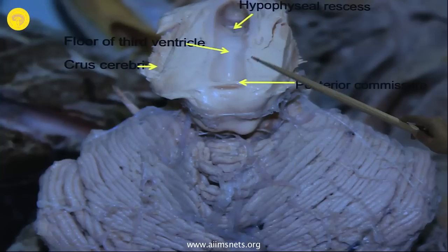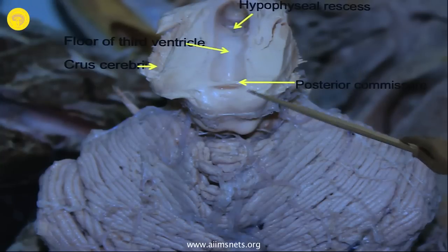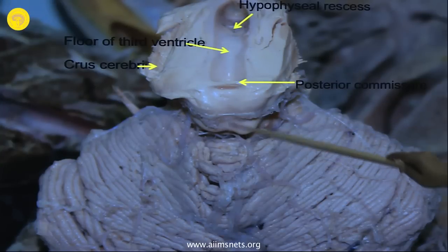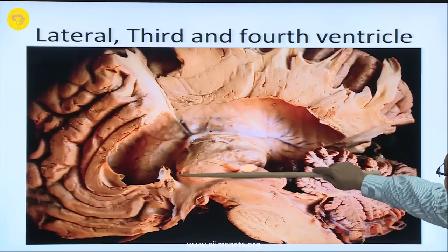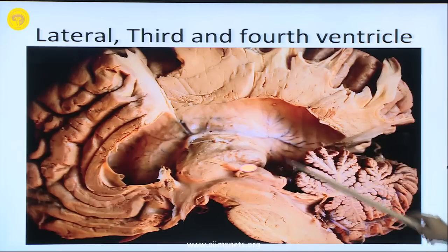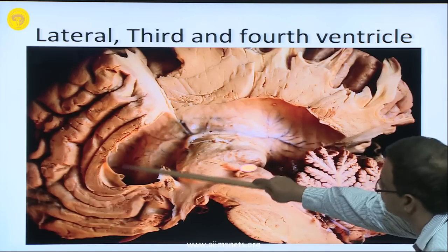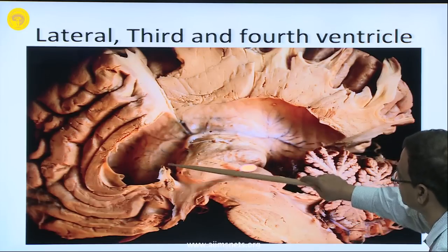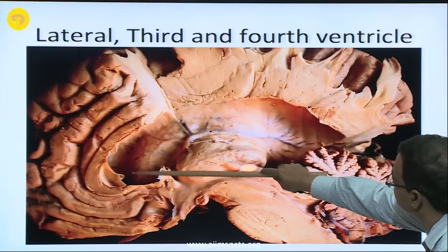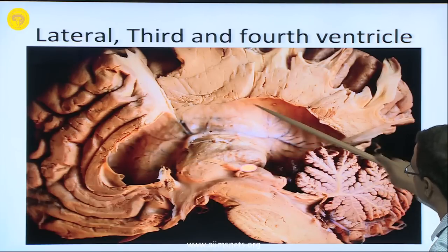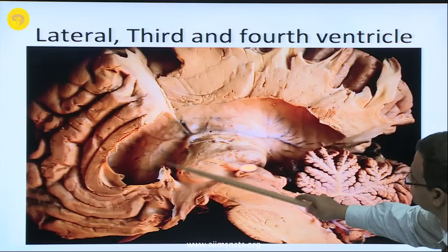This is the floor of the third ventricle; the crus cerebri is there. This is the posterior commissure, actually just above the two colliculi. The whole third ventricle and the lateral ventricles are seen. This is the caudate nucleus — as described, the ventricles are C-shaped. This is the C; the other part of the C you cannot see, it has gone to the temporal lobe.